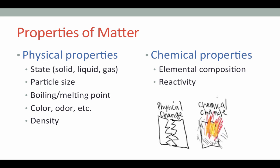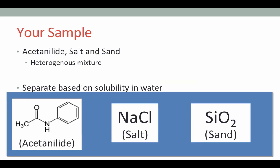So we're going to use these different physical properties of our mixture to separate it into pure substances. Your sample is going to be a mixture of acetanilide, which is pictured on the bottom left here as a large organic molecule, salt, which is just an ionic compound of sodium and chloride ions, and sand, which can be generally described as silicate or silicon dioxide. These three compounds behave differently in water, and so we can use their solubility in water to separate them.